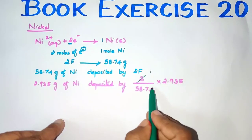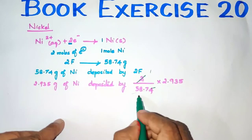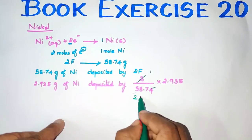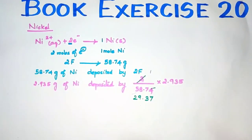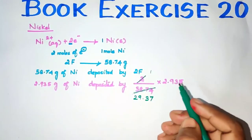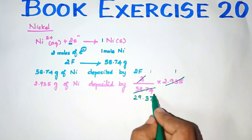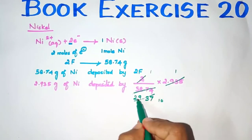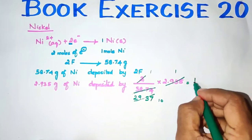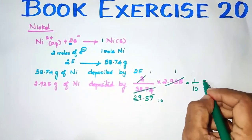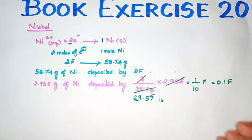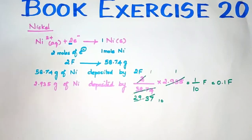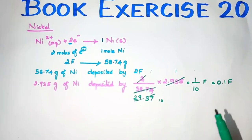So 2 divided by 58.74 into 2.935 — the 2s cancel, giving 2.935 / 58.74, which equals 1/10 Faraday, or 0.1 Faraday. So 0.1 Faraday of electric charge is passed when 2.935 grams of nickel is deposited.